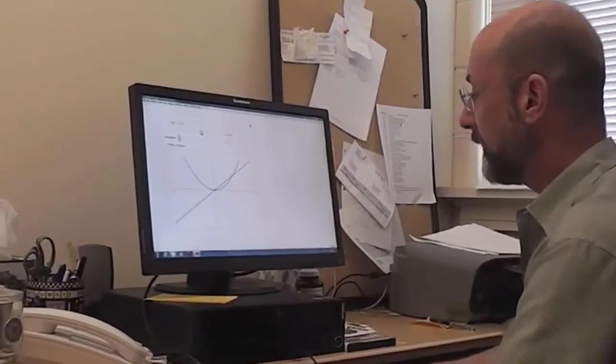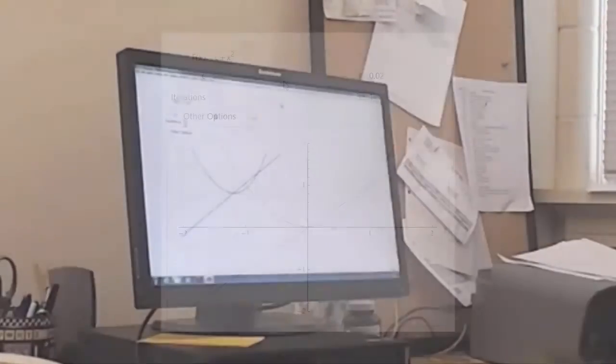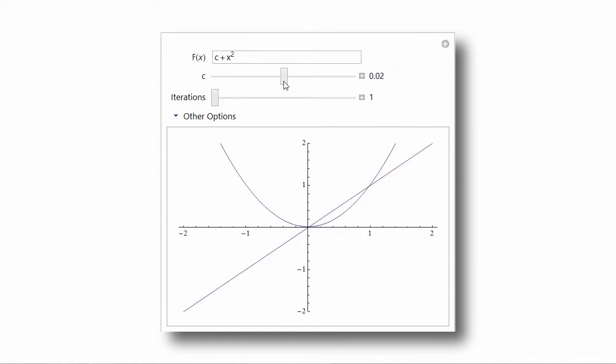But what happens when c changes? Now I think we're going to use the computer to get a more dynamic picture of what goes on. So let's take a look and use this tool in Mathematica. So here we have the same situation we saw on the paper. We have x² + c, but let's make c be 0, as close to 0 as we can get. And there are the two fixed points, attracting and repelling.